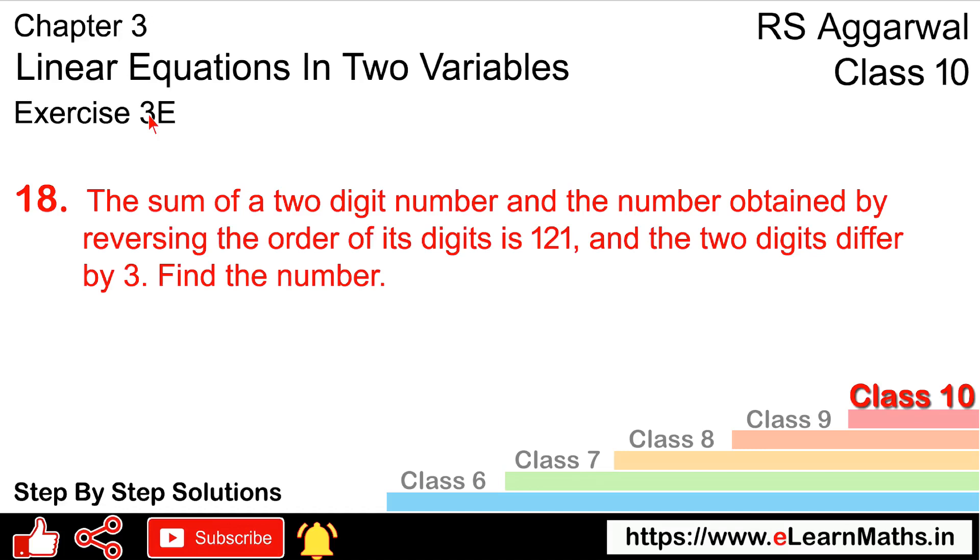Let's do question number 18 of exercise 3E, that is linear equations in two variables. Question number 18 is: The sum of a two-digit number and the number obtained by reversing the order of its digits is 121, and the two digits differ by 3. Find the number.